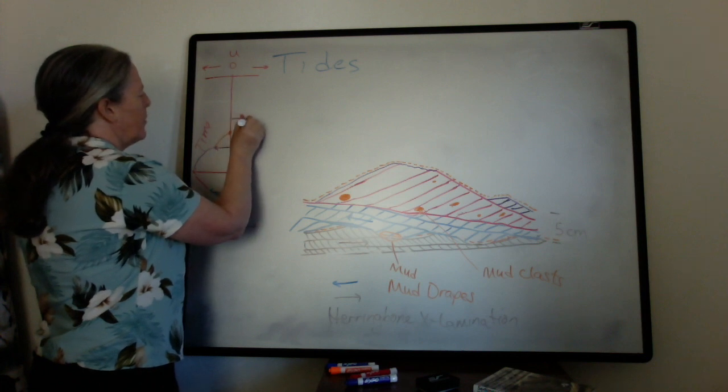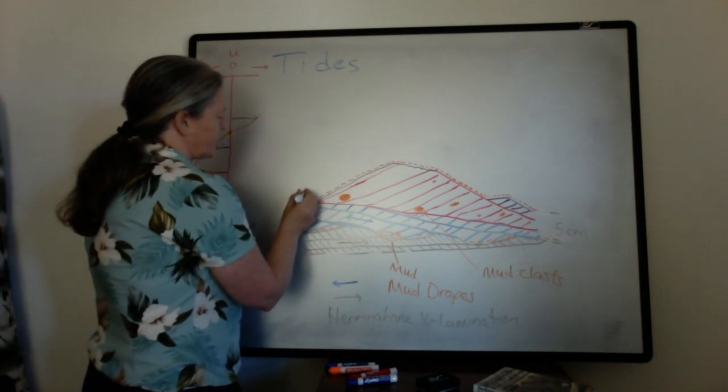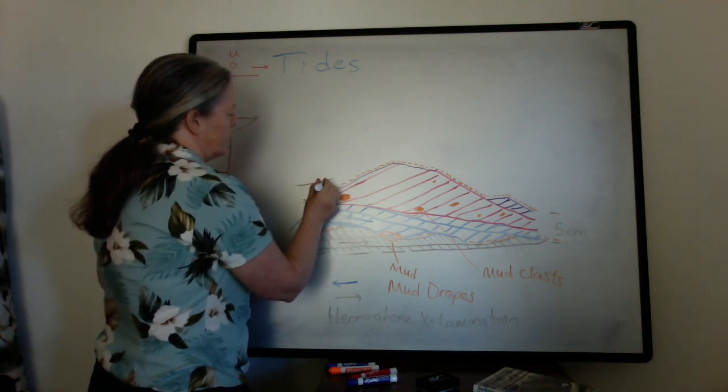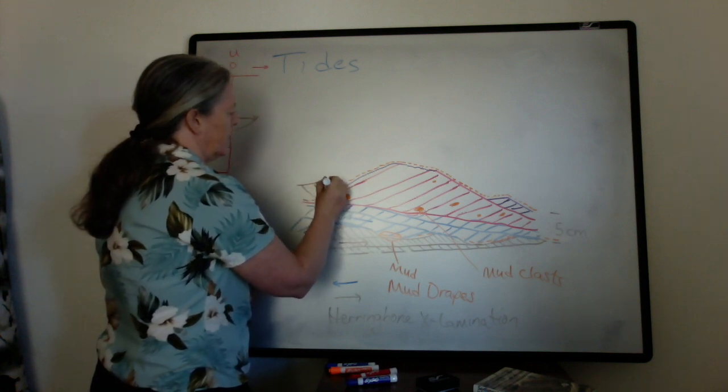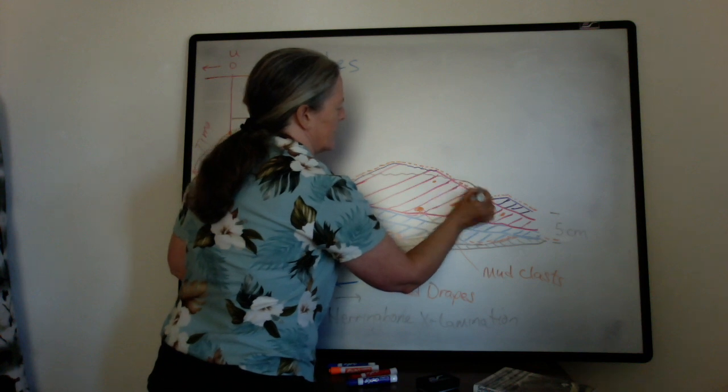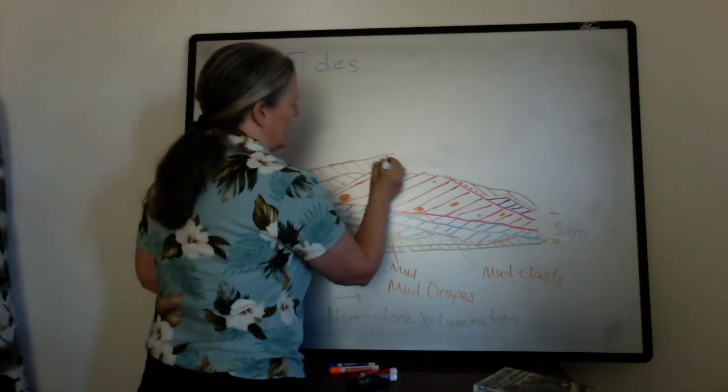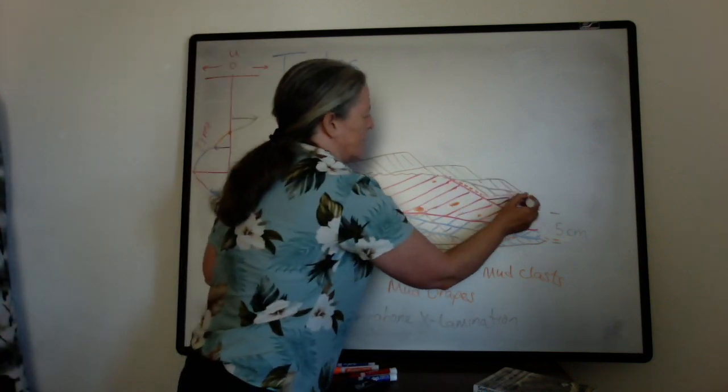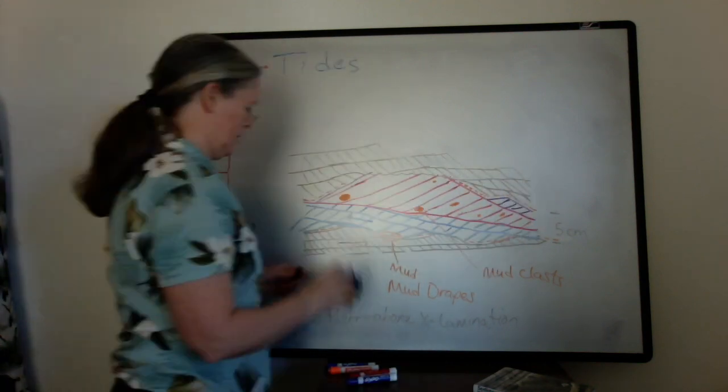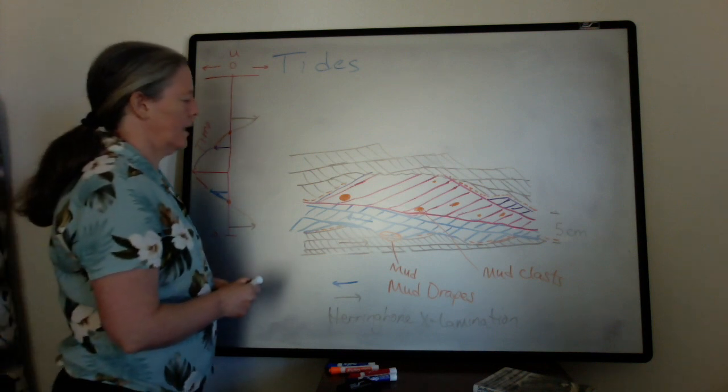And then we go back to maybe ripples going in this other direction. So you might end up propagating ripples in this direction but there's this extra topography here. So then maybe there's a little bit more erosion across here and you get some lamina coming down here.